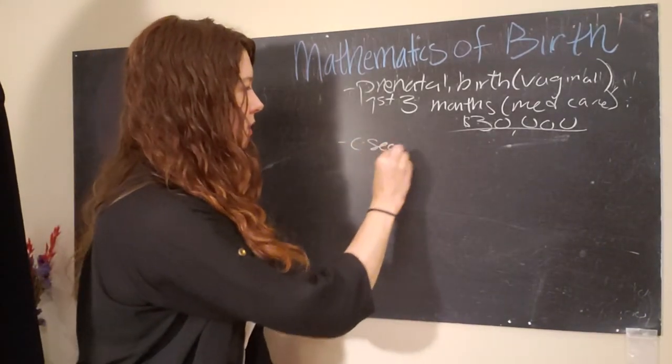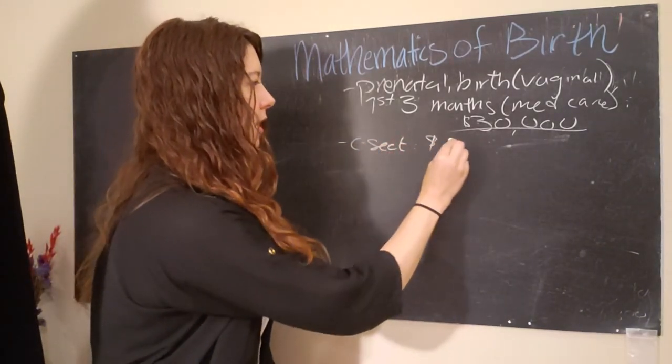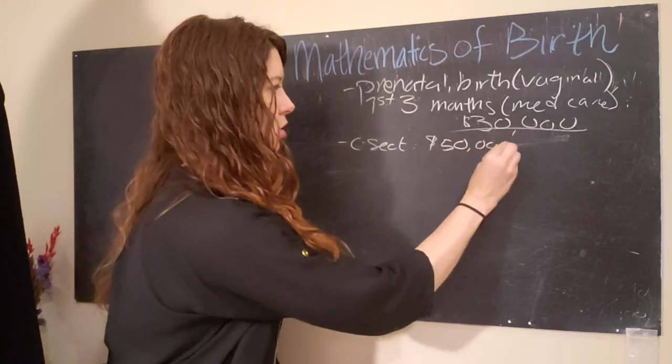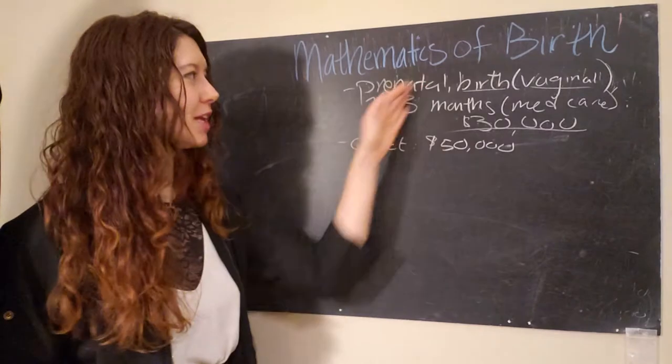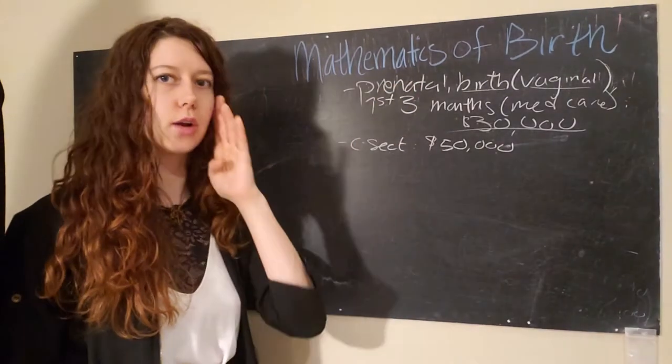If you have a c-section or cesarean section, that cost jumps about $20,000, which is largely due, obviously, if you have a c-section, that's the one thing that's different between these two categories.